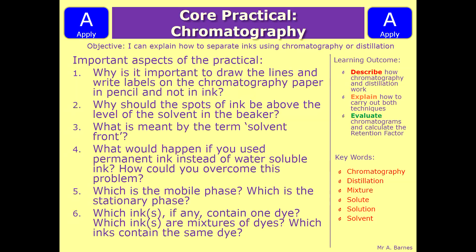You also need to know: why should the spots of ink be above the level of the solvent in the beaker; what is meant by the term solvent front; what would happen if you use permanent ink instead of temporary ink and how could you overcome this; what is the mobile and stationary phase; and which inks, if any, contain one dye, which are mixtures, and which contain the same dye.